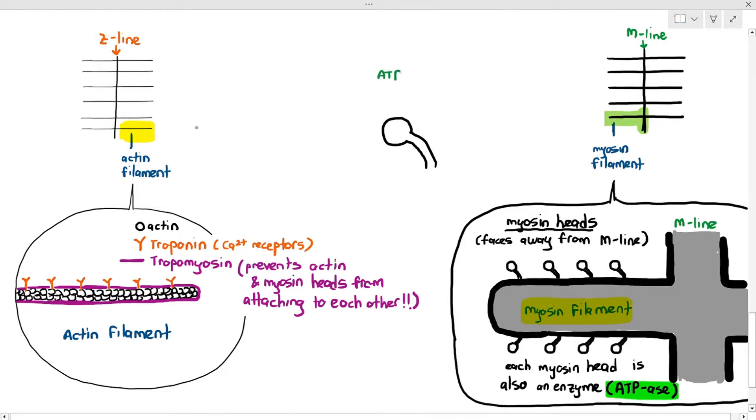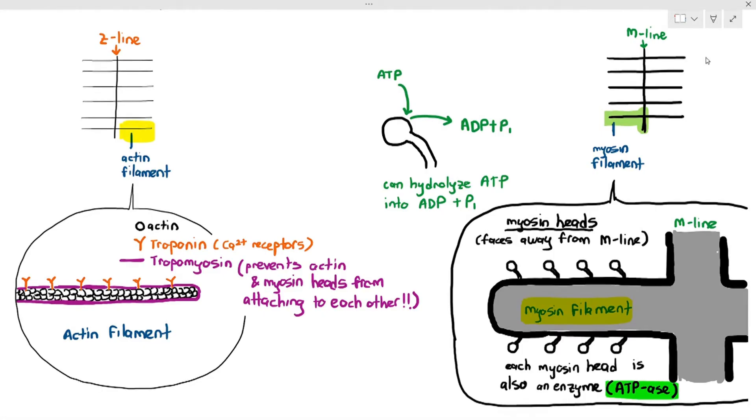What I mean by that is they can actually receive ATP molecules and ATP molecules can attach to them, and they can also hydrolyze ATP into ADP and phosphate. So the myosin head can act as ATPase, which is a type of enzyme that has the function of hydrolyzing ATP.